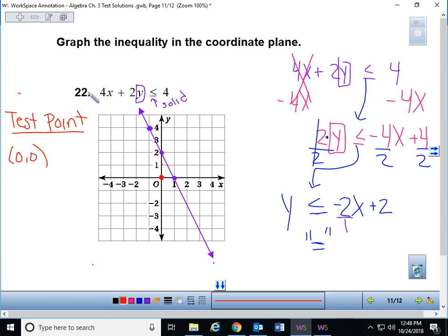And we're just going to see if we get something true. Now, I'm going to plug it into the original inequality. You could plug it into the solved inequality for y, but just in case you make a mistake, it's easier just to plug it into the original. So this means instead of writing our y variable, we're going to write 0. Instead of writing our x variable, we're going to write 0 because it's 0, 0.